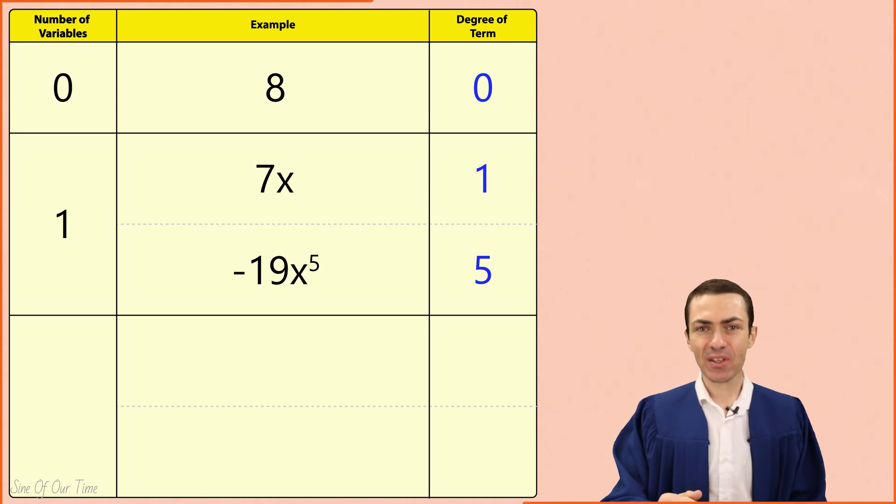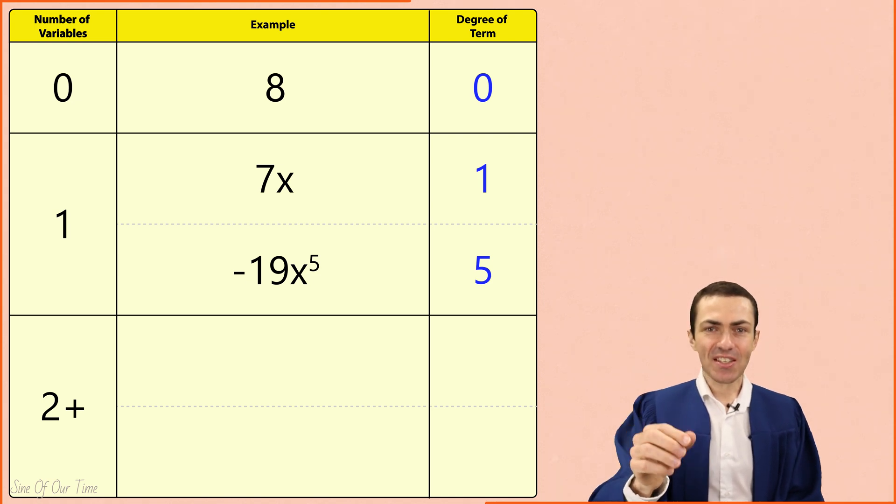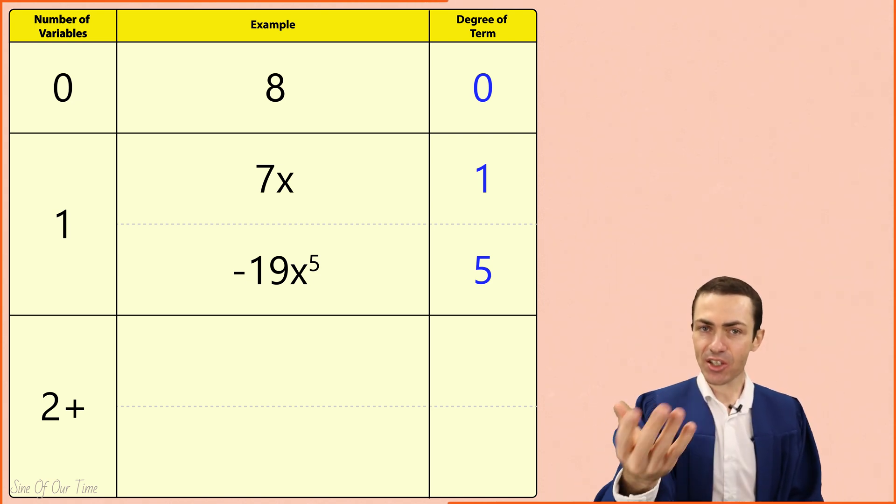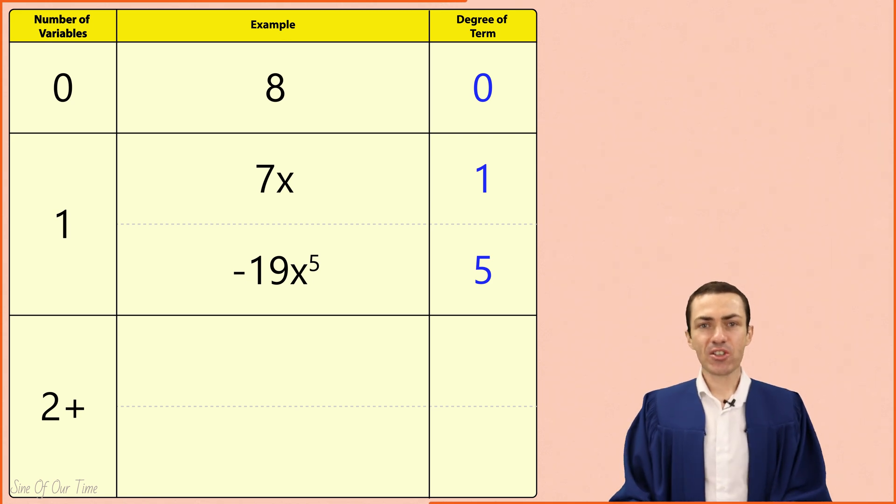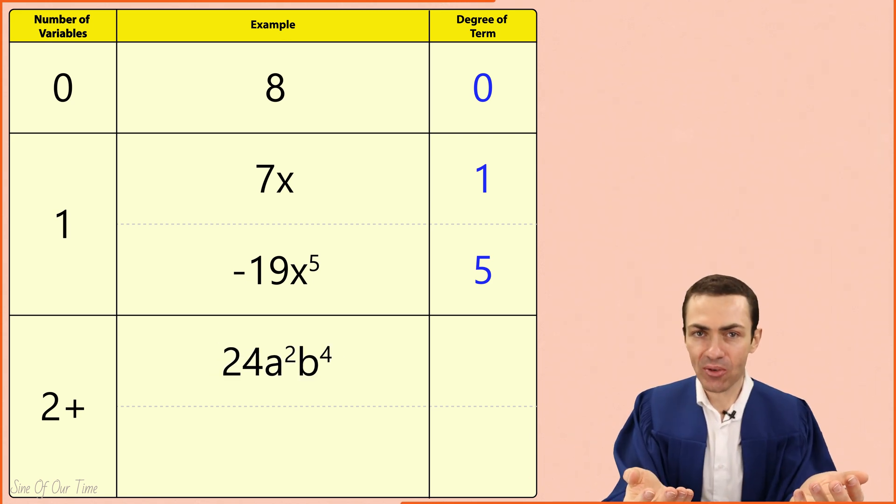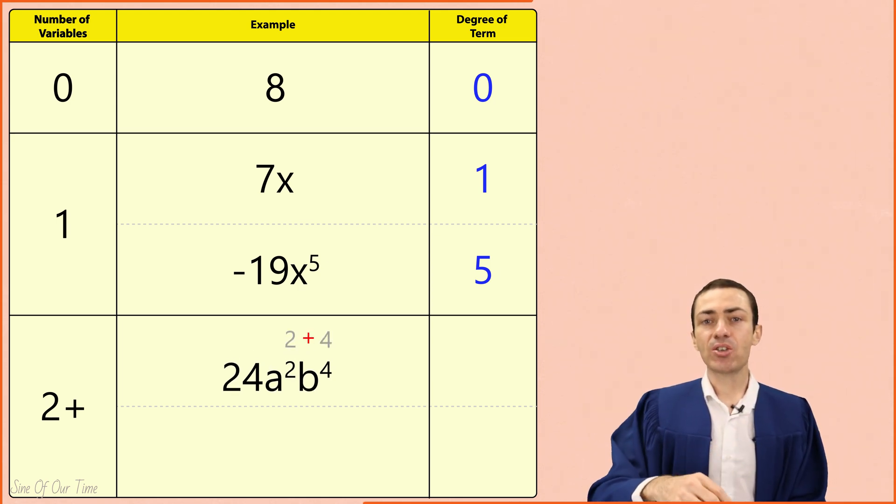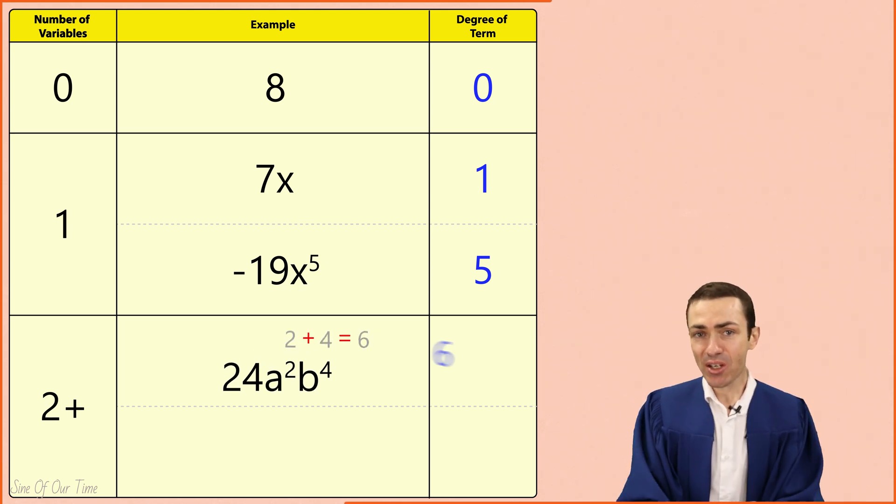Finally let's consider terms that contain more than one variable. If this is the case simply add up the exponents of the variables to get the degree of the term. For example 24a squared b to the power of 4. We would simply take 2 plus 4 to give us 6 which is the degree of the term.